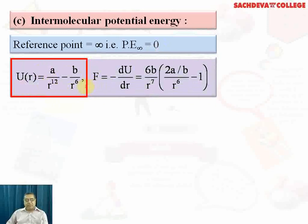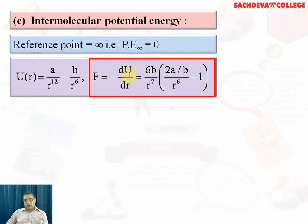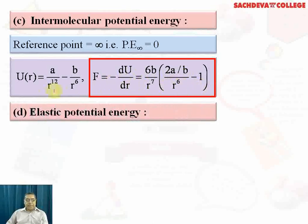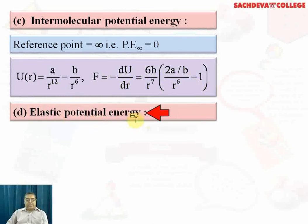The force is given by F = −dU/dr = 6b/r⁷ × (2a/b÷r⁶ − 1). Now elastic potential energy comes under the action of elasticity.